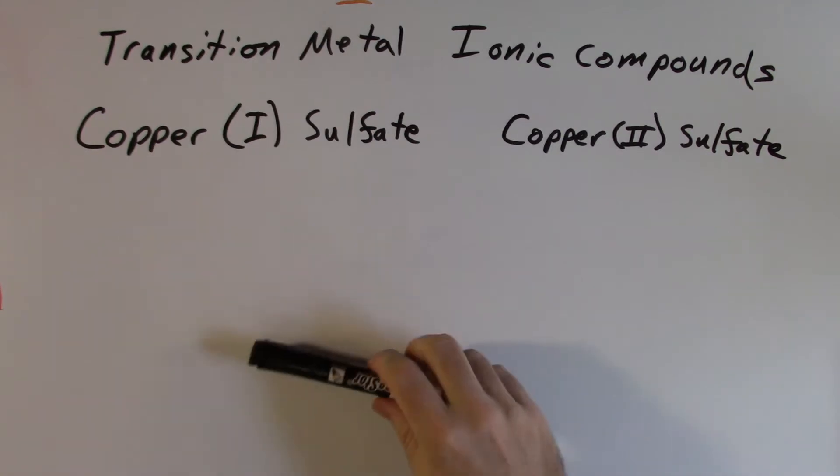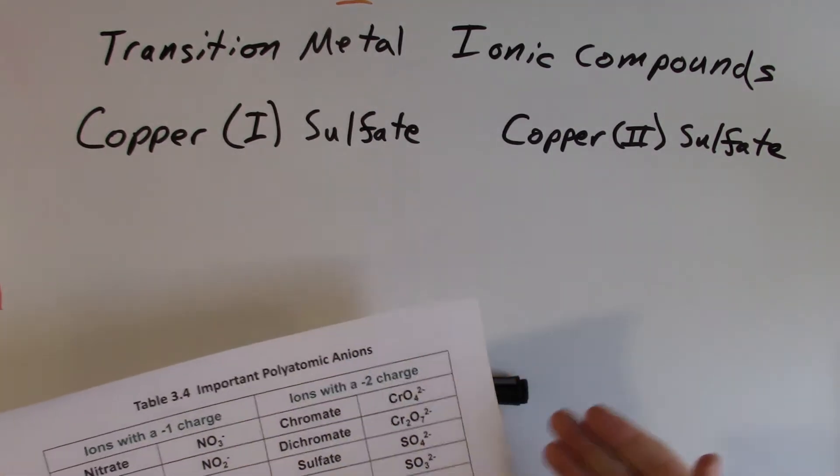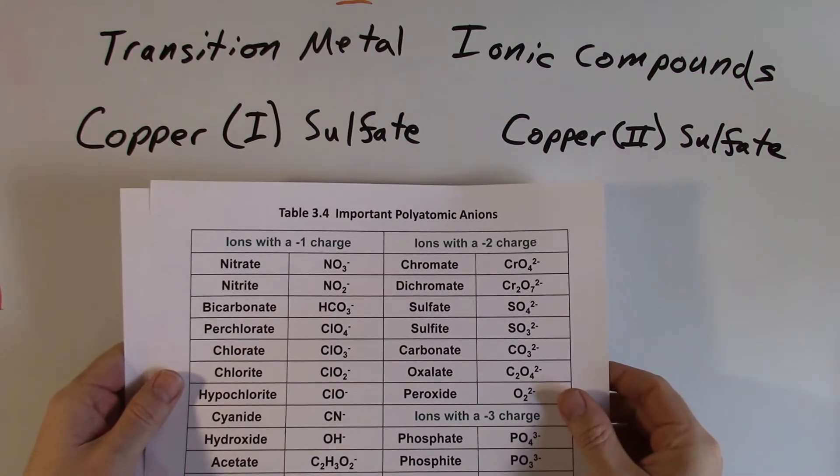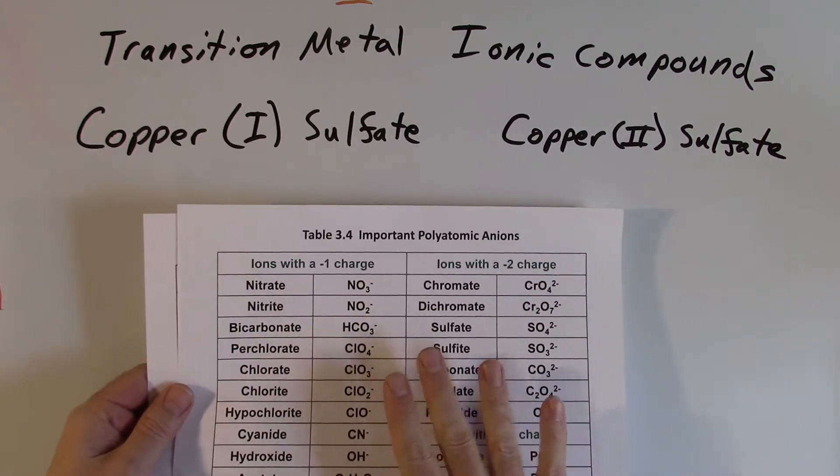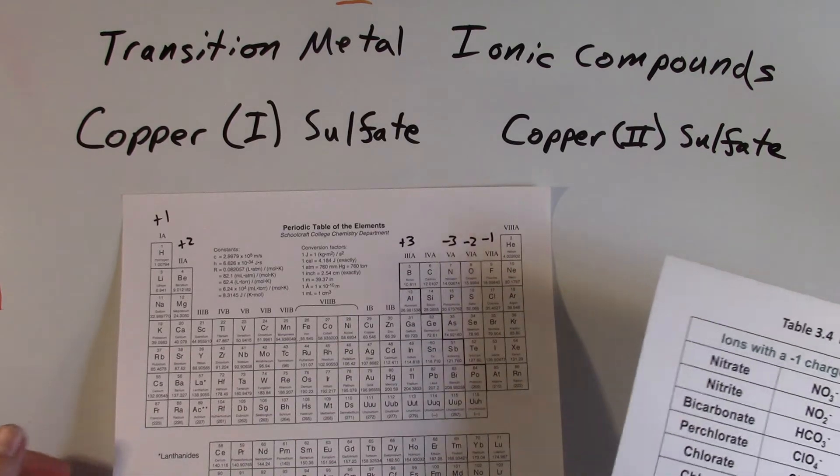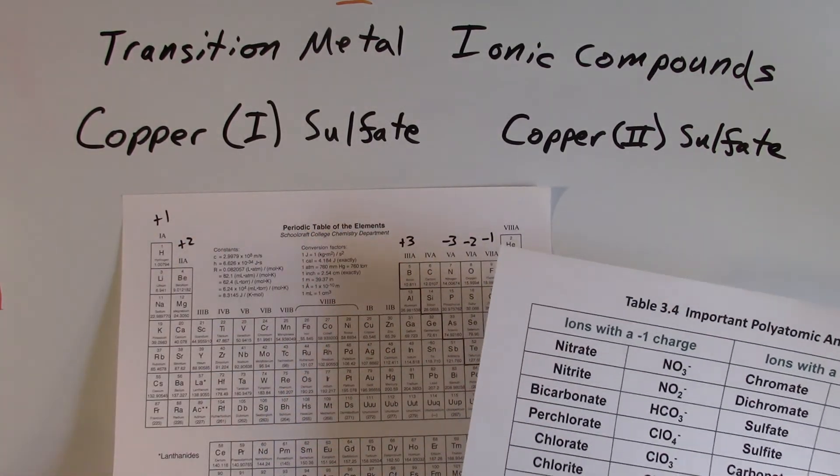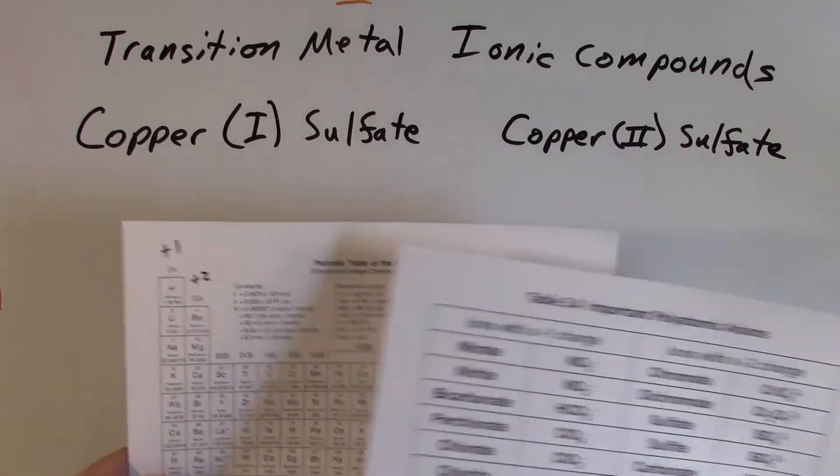When you're naming ionic compounds, typically you just need to write out the name of the metal and the name of the nonmetal with an IDE ending or the name of the polyatomic ion. I got my list of polyatomic ions. Anytime you're practicing this, you want to make sure you have your list of polyatomic ions handy, as well as your periodic table, where you can figure out what the charges are for those different ions.